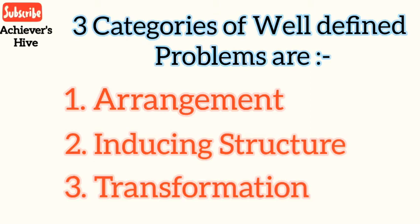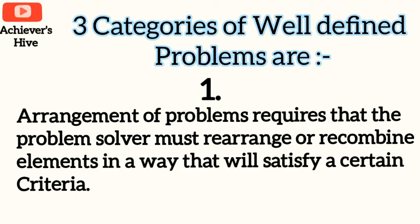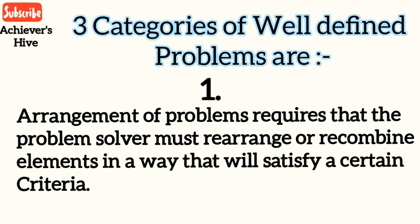Arrangement problems require that the problem solver must rearrange or recombine elements in a way that will satisfy certain criteria. Usually several different arrangements can be made, but only one or a few arrangements will produce a solution. For example, anagram problems or jigsaw problems are examples of arrangement problems — in these, we have to first arrange, and then we come to the solution.